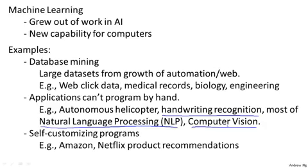Learning algorithms are also widely used for self-customizing programs. Every time you go to Amazon or Netflix or iTunes Genius and it recommends new movies, products, or music to you, that's a learning algorithm. If you think about it, if you have a million users, there's no way to write a million different programs. The only way to have software give these customized recommendations is if it can learn by itself to customize itself to your preferences.